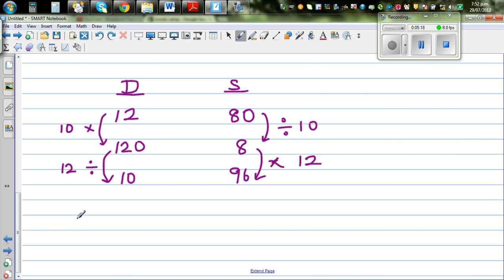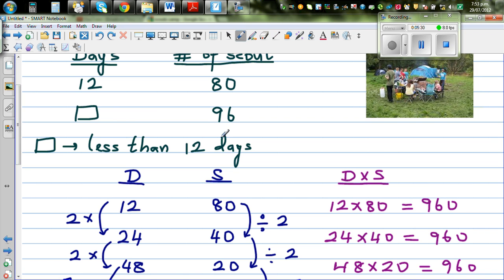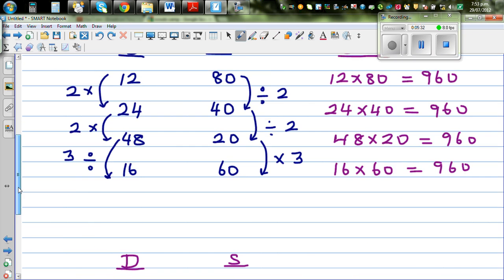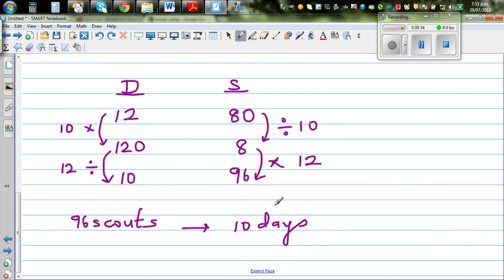So the answer is, if you've got 96 Scouts in the camp who turn up, you've got food for, enough food for 10 days. Which is what we thought initially. This has to be less than 12. And it does make sense that if you've got 96 Scouts, you need 10.